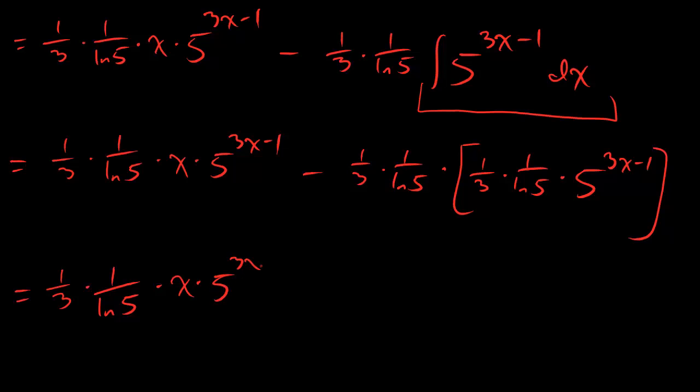x, 5 to the 3x minus 1, minus. All right, and then let's combine our stuff. 1 third times 1 third is 1 over 9. Here we have two copies of 1 over ln 5, so I'm going to say ln 5 squared. Ha ha, I see what I did there. And then multiply that by 5 to the 3x minus 1. And last but not least, it's an integral, so your answer had better freaking have a plus C in it. Do you know what I am saying?